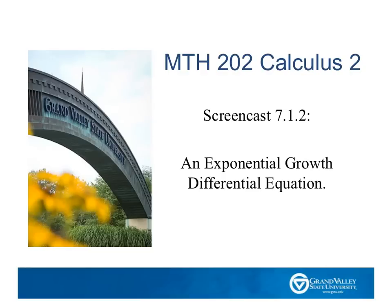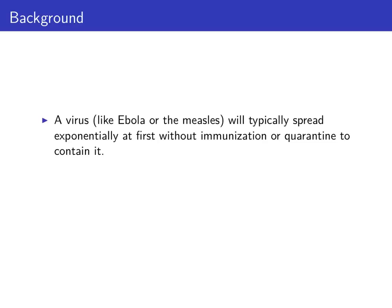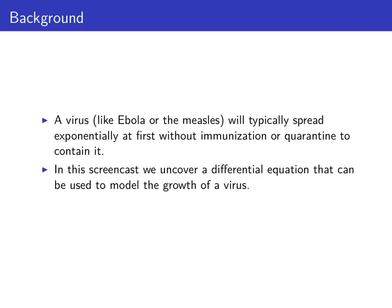Welcome to the GVSU calculus screencasts. In this edition we're going to talk about a differential equation to model exponential growth. Populations of things like people or viruses typically spread exponentially at first if there's no quarantine to contain them or no immunization for them. In this screencast we'll uncover a differential equation that can be used to model the growth of the virus.